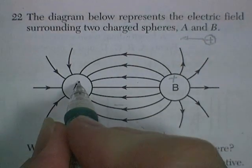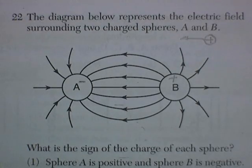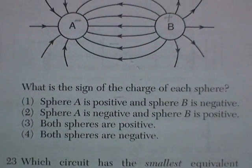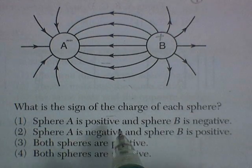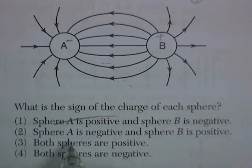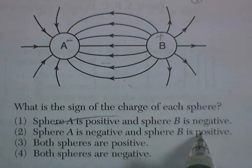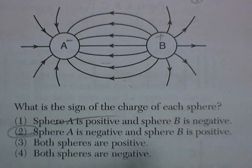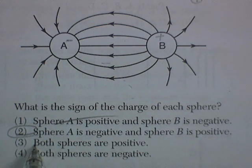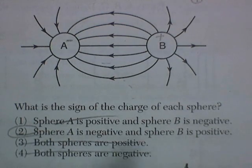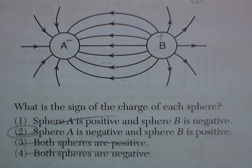So let's see what the question is. What's the sign of charge on each sphere? Sphere A is positive. No, it's not. Sphere A is negative. And sphere B is positive. That's the right answer. Both spheres are positive? No. Spheres are negative? They wouldn't do that. All right.